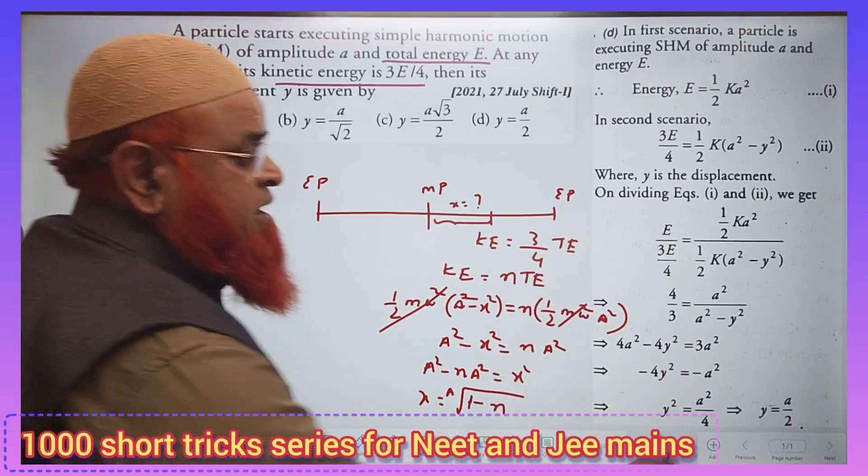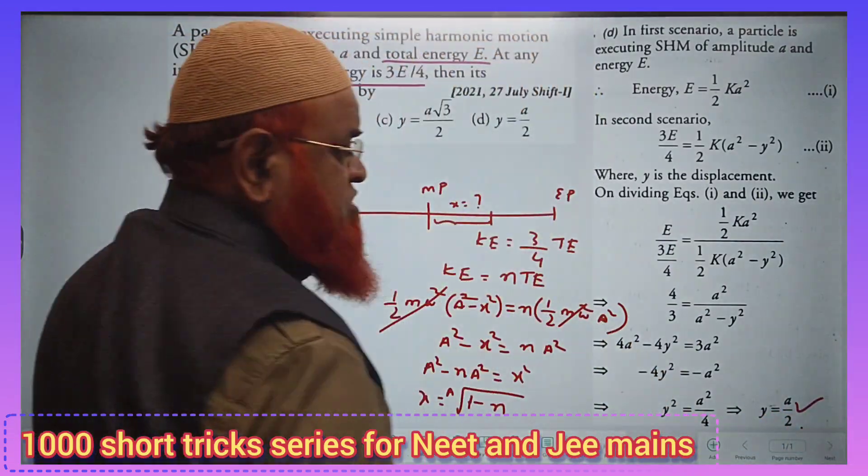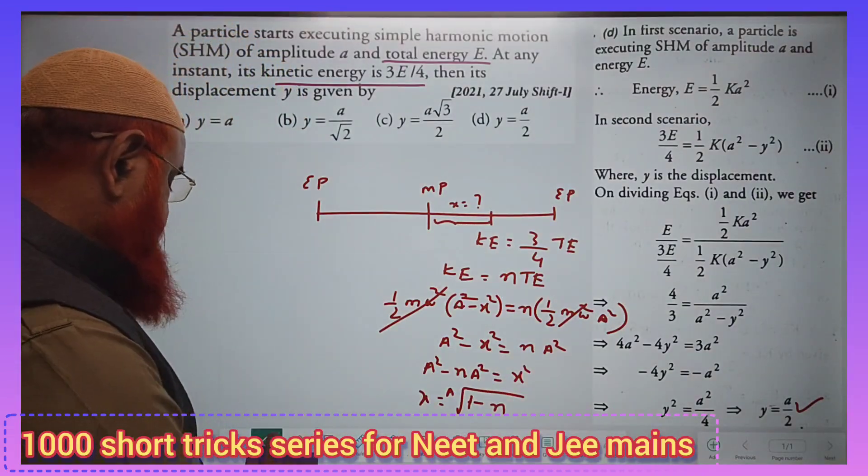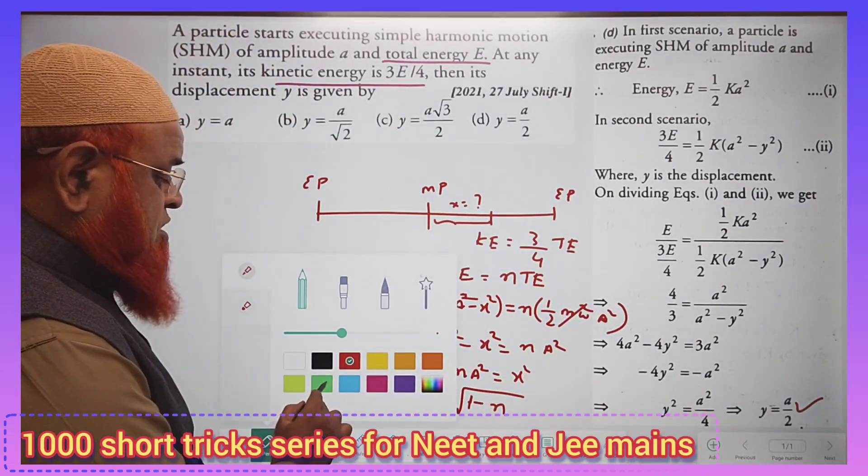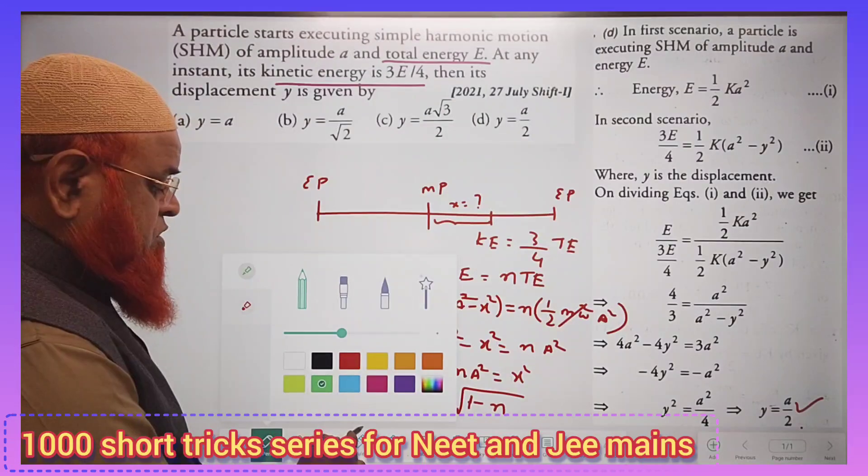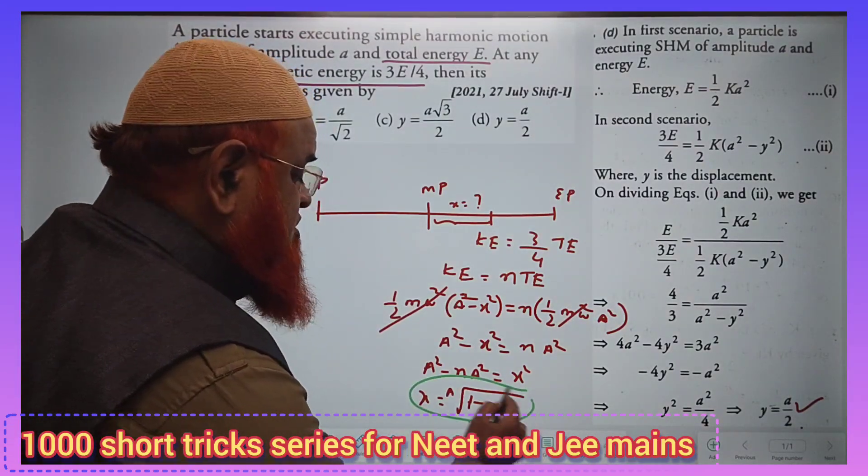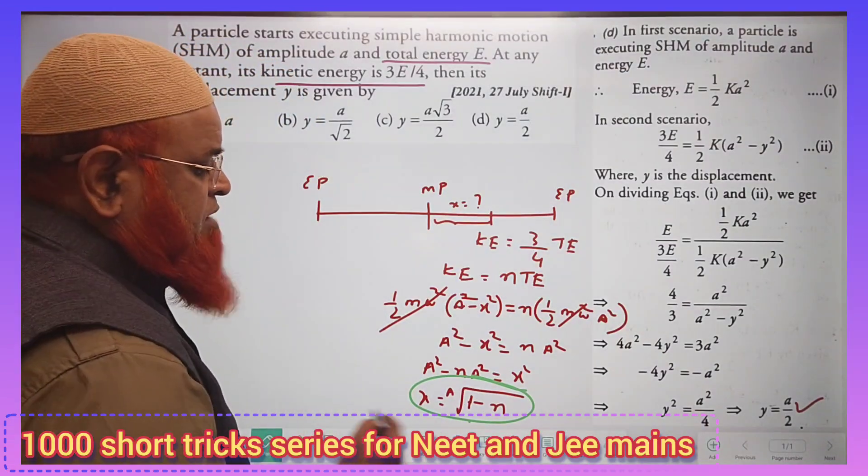Now just see how I am going to solve this problem and get directly a by 2 without all these steps. So just remember the shortcut formula here and go according to this shortcut formula which will give you a wonderful time saver. This is going to be a wonderful time saver shortcut formula.